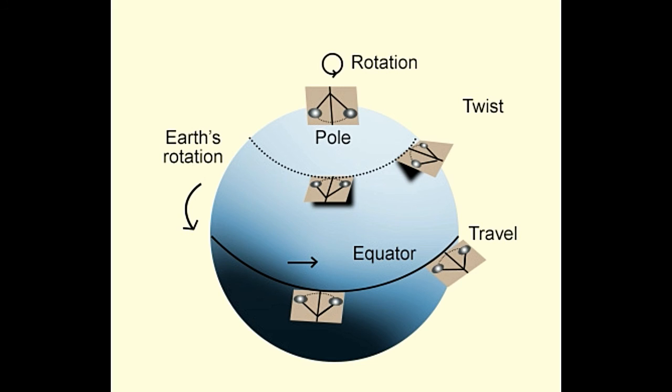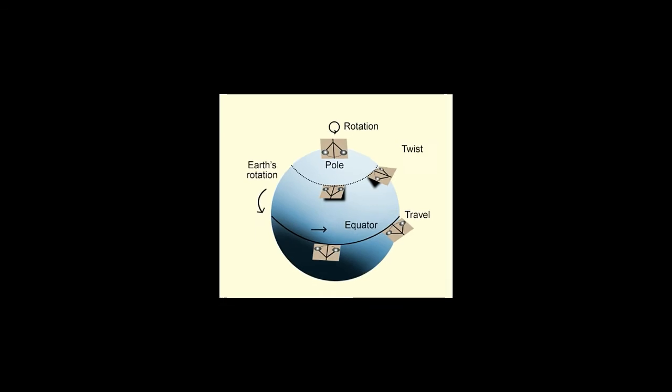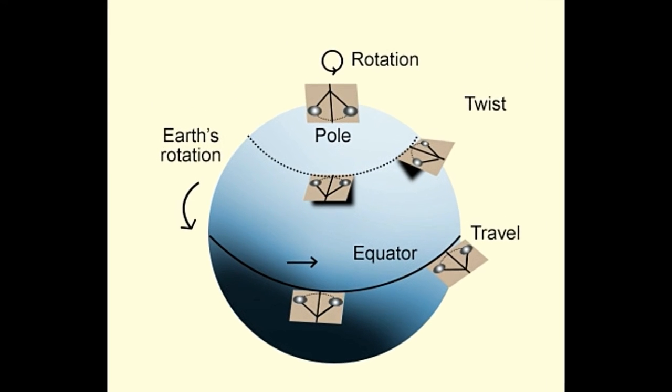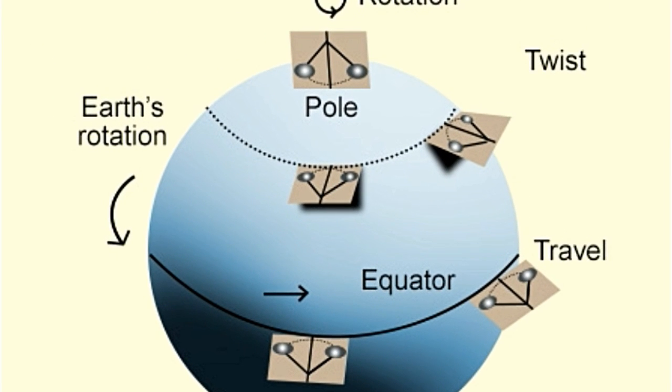The degree of twist per day, n, is given by the following formula: n equals 360 degrees times sine phi. If the Foucault's pendulum is used at 30 degrees south latitude, it will twist by 180 degrees per day and will complete a full rotation in two days.